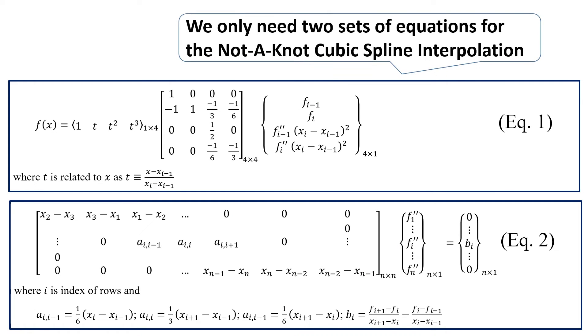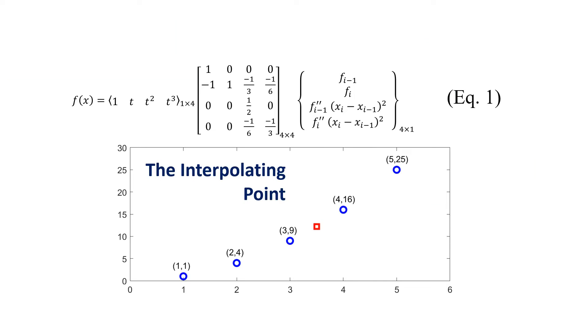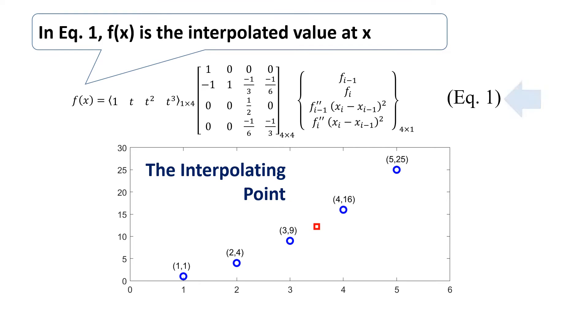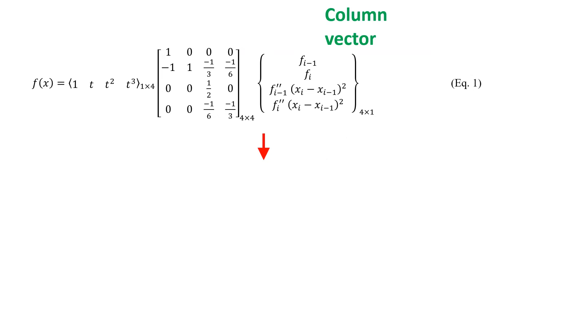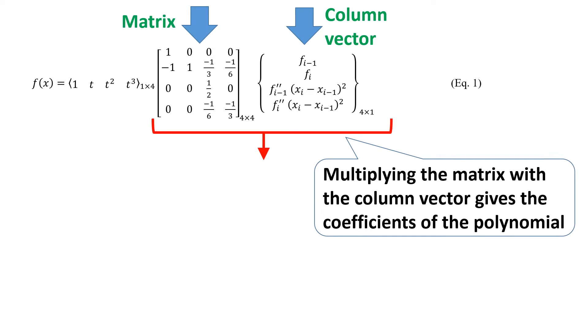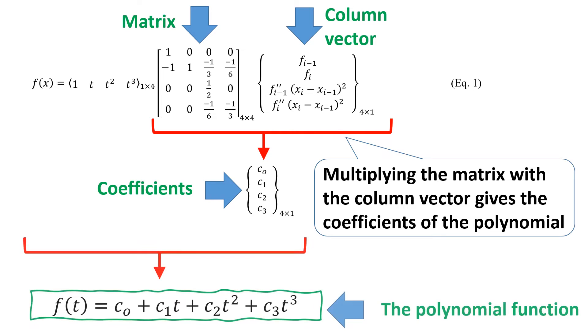We only need two sets of equations for the not-a-knot cubic spline interpolation. In equation 1, f is the interpolated value at x. Multiplying the matrix with the column vector gives the coefficients of the polynomial.